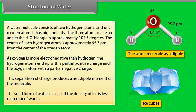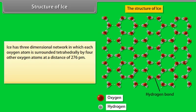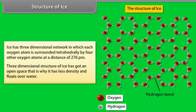The solid form of water is ice and the density of ice is less than that of water. Ice has a three-dimensional network in which each oxygen atom is surrounded tetrahedrally by four other oxygen atoms at a distance of 276 picometers. The three-dimensional structure of ice has got an open space. That is why it has less density and floats over water.